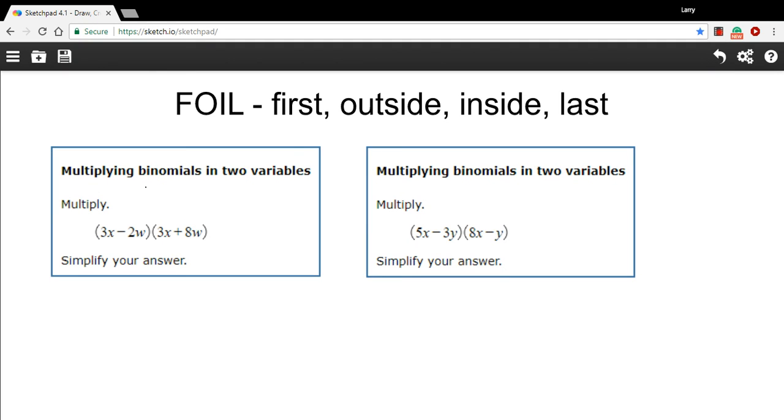In these problems, we are multiplying binomials, and the only thing that might be a little unusual is that instead of just one variable and a number, each binomial has two variables. So in this problem, we have x's and w's.